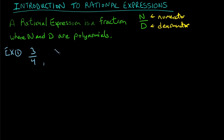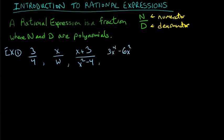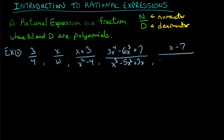You can also have things like x over w — that's also a rational expression. You can have x plus 3 over x squared minus 4, and you can get higher degrees, like 3x to the fourth minus 6x cubed plus 7 divided by x cubed minus 5x squared plus 3x. You don't have to have the same number of terms — for example, a binomial divided by a trinomial.